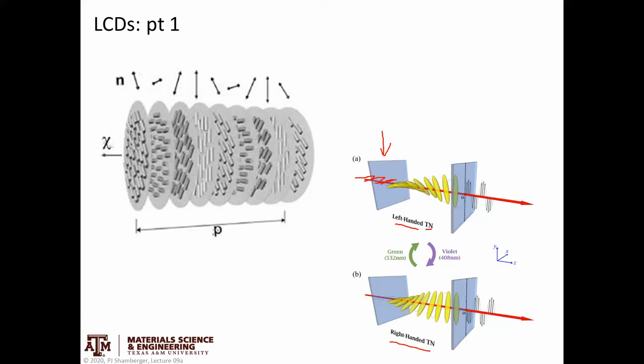But the important thing here is that how much they rotate is dependent on the amount of material they pass through, so the distance that they're passing through, as well as this degree of rotation of the material itself. And so if we have exactly the right amount of material, we can go from something that's polarized horizontally to something that is polarized vertically after it has passed through that material. And understanding this is really key to understanding how liquid crystal displays work.